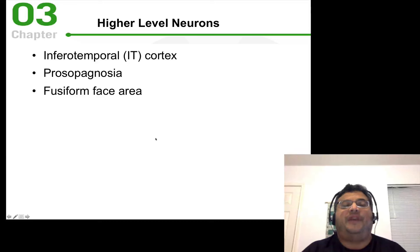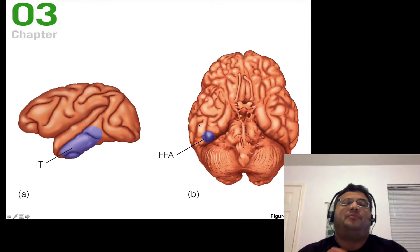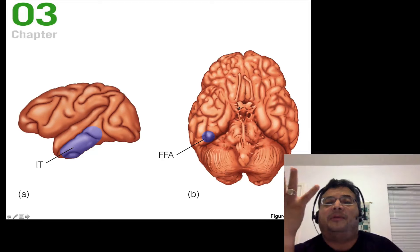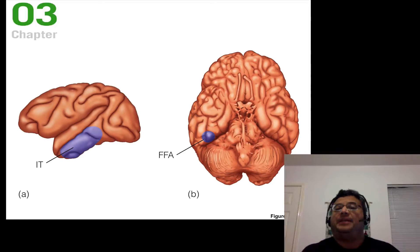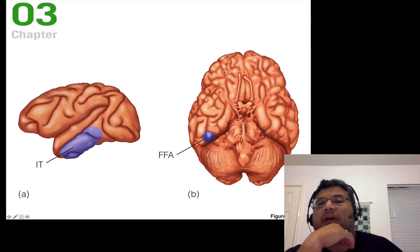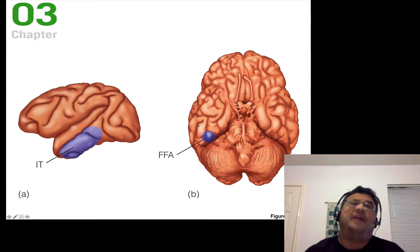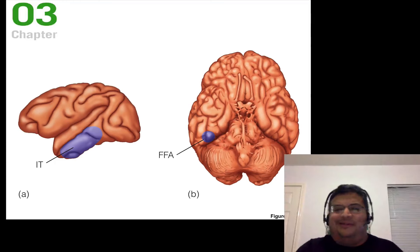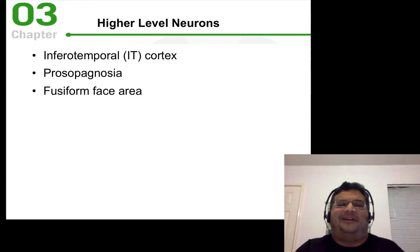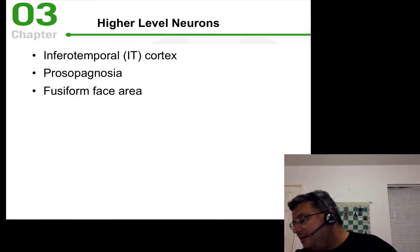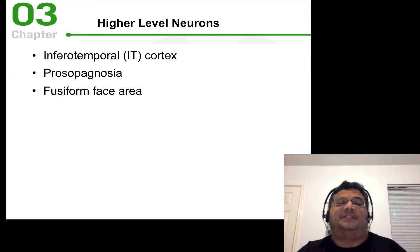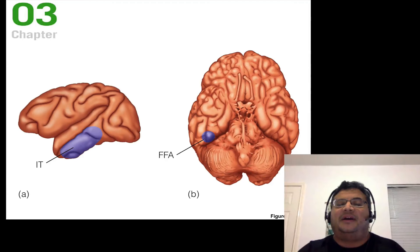In the human brain we have the fusiform face area, called the FFA. Looking at the bottom of the human brain, the fusiform area is located underneath the temporal lobe and seems to be really important in helping us identify faces. There's a disorder called prosopagnosia — the inability to recognize faces — where you can perceive a face but don't recognize it as one. You can get this if you have damage to the fusiform area, for example from a stroke.